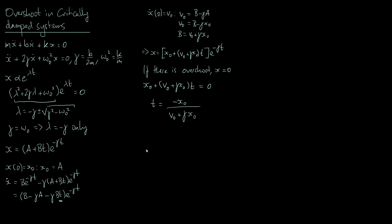For overshoot, we need this value of t to be positive, since we start at t = 0 and the crossing must happen after the motion has begun. There are two different cases that would make t positive.